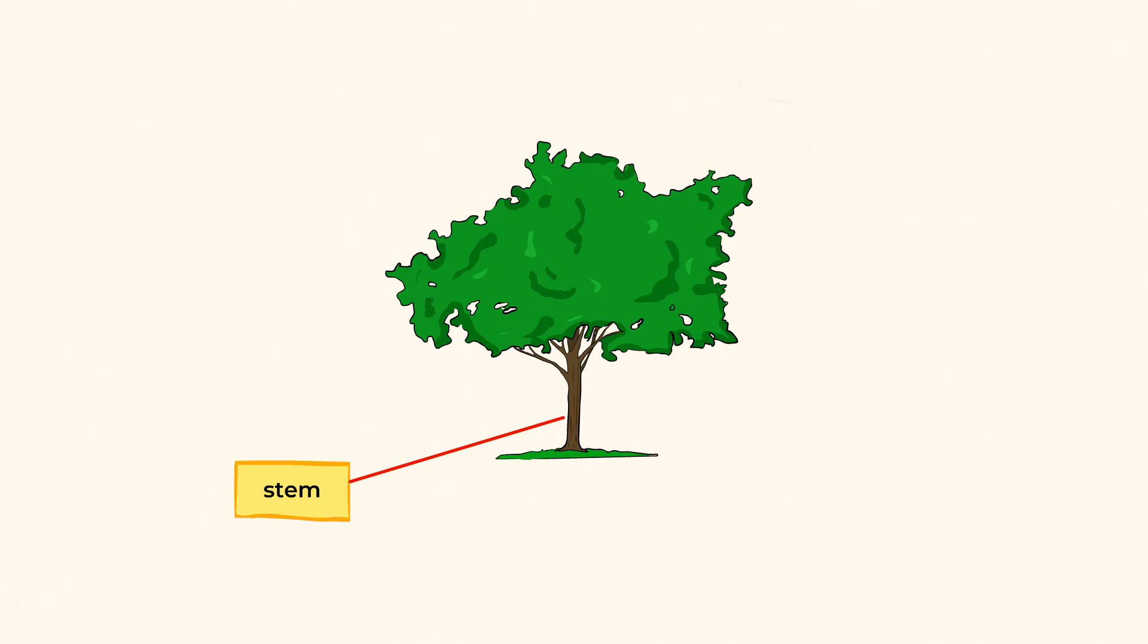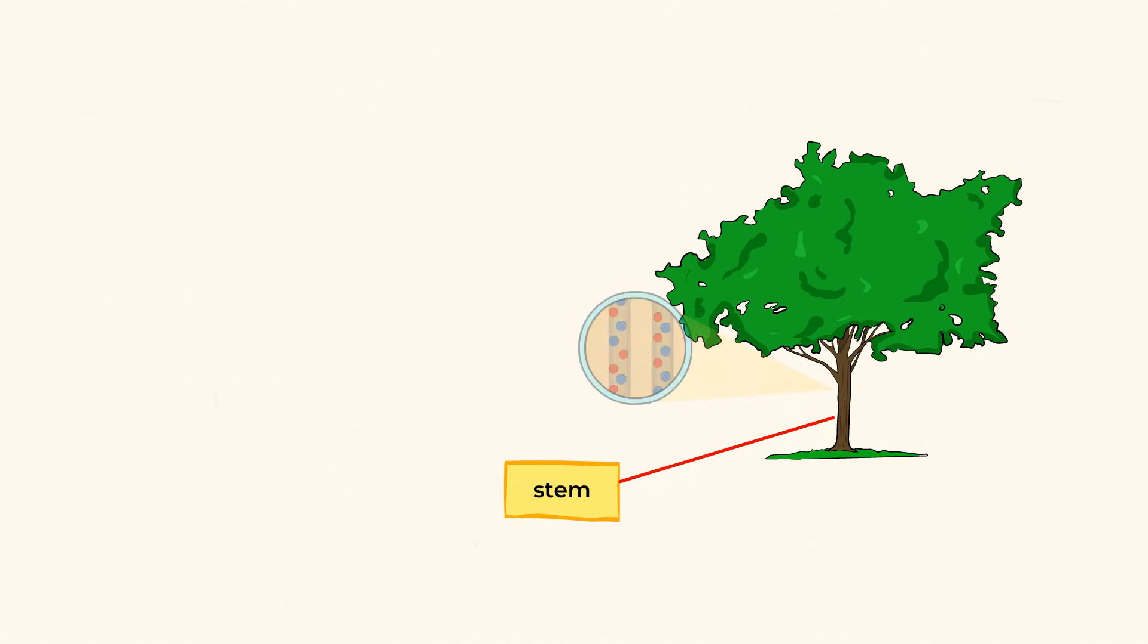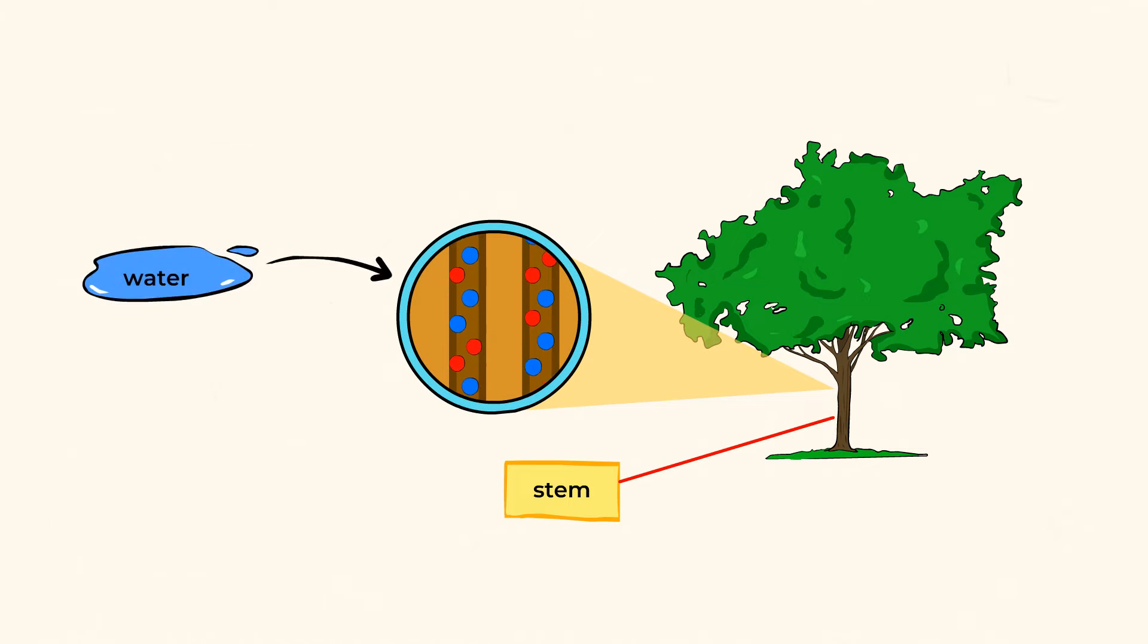Then, we have stems, which are there to hold the plant upright. And they also have a very important role. Stems move water and nutrients throughout the whole plant.